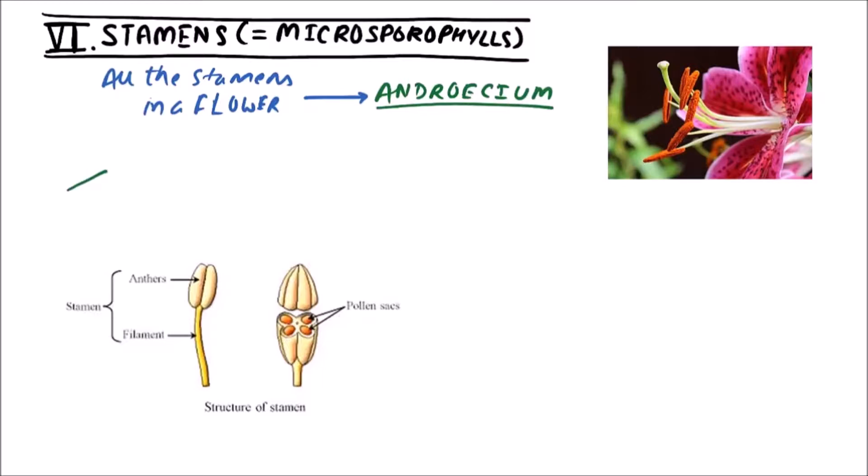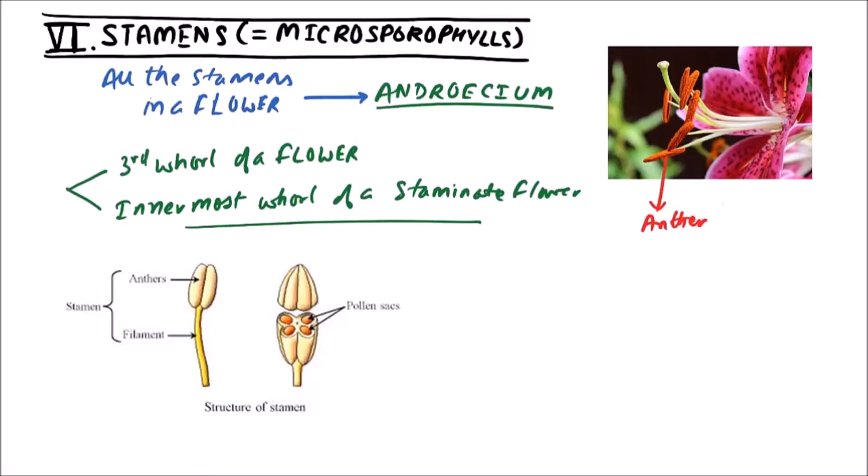The stamens form the third whorl of a flower or innermost whorl of a staminate flower. A typical stamen consists of an anther and a filament. We can observe that this is an anther and this is a filament. Filament represents the stalk of anther which is connecting the anther with thalamus.